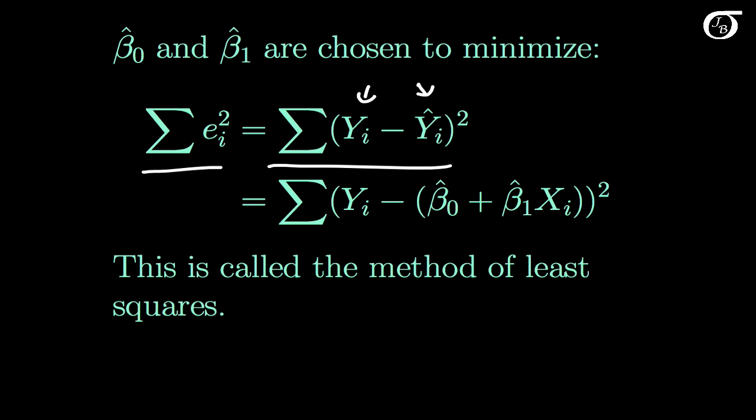So we've got the least squares criterion here, in that we are minimizing the sum of the squared residuals. But we don't yet have formulas for beta0 hat and beta1 hat. We're going to actually need to work these out when we have sample data.